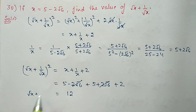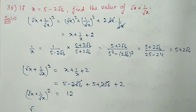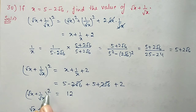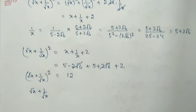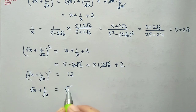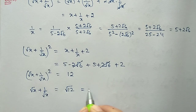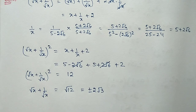So (√x + 1/√x)² = 12. Taking the square root of both sides: √x + 1/√x = ±√12 = ±2√3.